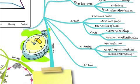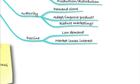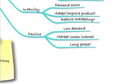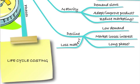The final phase is the decline phase. Here we'll see lower demand and the market losing interest in the product. However, be aware that this decline phase could be very long — there may be low demand, but we could still be able to make profit, so we still produce it. Eventually the product is likely to turn into a loss-maker, at which point we'll probably choose to pull the product from the market.